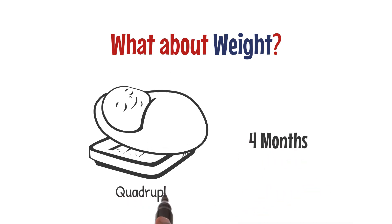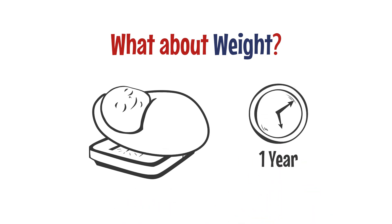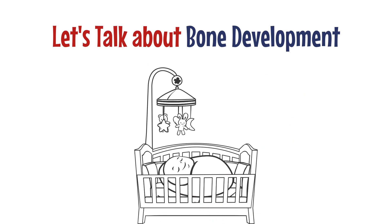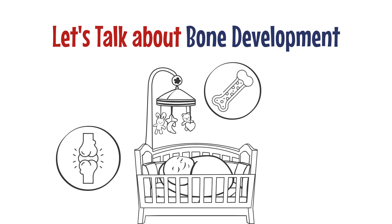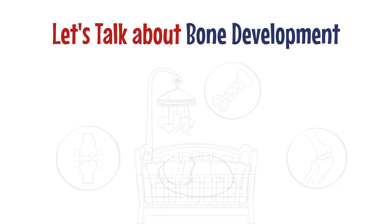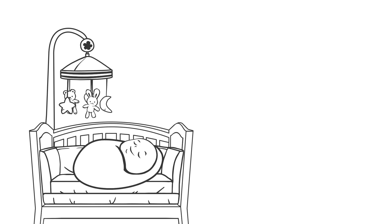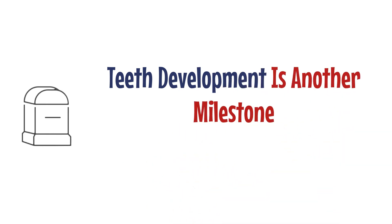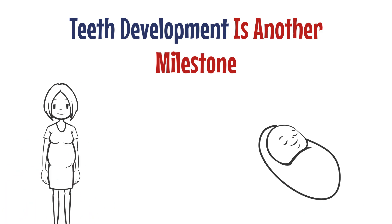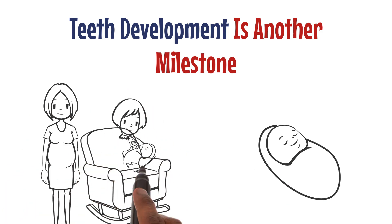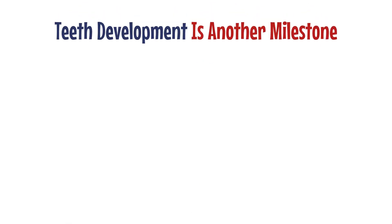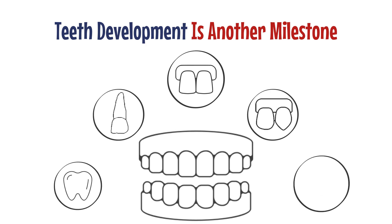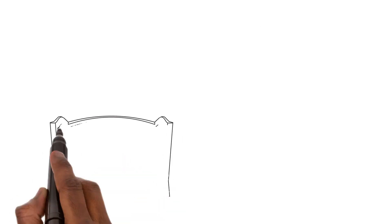By four months, babies usually quadruple their birth weight, and by one year they triple it. During infancy, bones start to stiffen, but baby bones are fragile and can be easily distorted. To avoid flat heads or chests, change the baby's sleeping position every few hours. Teeth begin forming in the baby's jaws as early as the third or fourth month of pregnancy but usually don't emerge until around five to six months. The first teeth to appear are the central incisors, followed by lateral incisors, canines, first molars, and second molars.